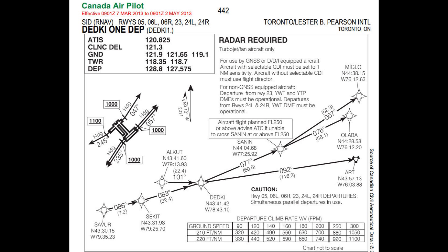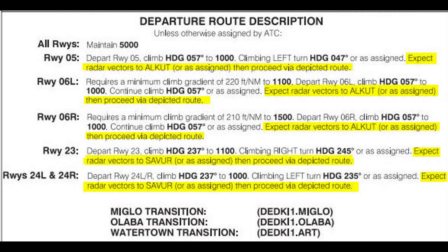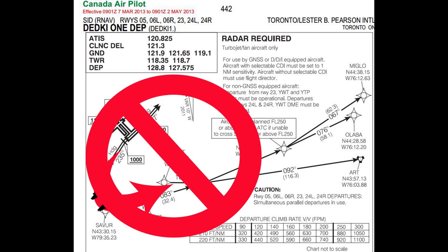Here's the chart for the Dead Key 1 departure. Using runway 2-4 right as our example: you're expected to climb on runway heading to 1,000 feet, then turn left to a heading of 2-3-5 degrees, and then expect a vector to the first waypoint of the departure SID. At the bottom of the Dead Key chart, for every runway assignment it states: expect radar vectors to the first waypoint in the RNAV SID. The biggest mistake pilots make is heading directly to their first waypoint after takeoff instead of following those instructions.